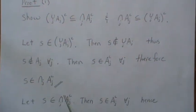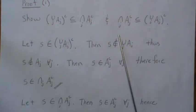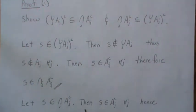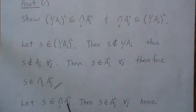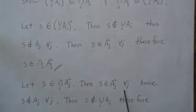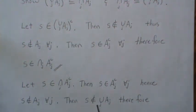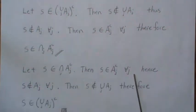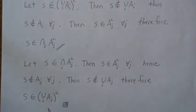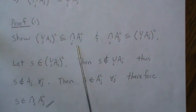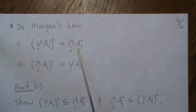Now we go the other way: let s be an element of the intersection of A_j complements. That means s has to be an element of every single one of these A_j complements — otherwise it wouldn't be in the intersection, it has to hold for every j. Hence, if it's in A_j complement, it can't be in A_j, because it's in the complement for all j. Well, if it's not in any A_j, then it's not in any union, so therefore it has to be in the complement of the union. We showed that one is a subset of the other and vice versa, so they must be equal.